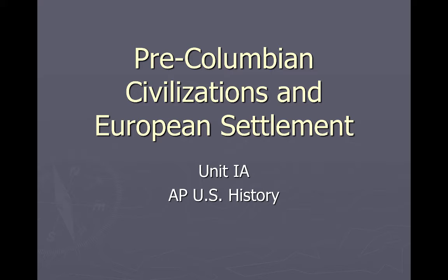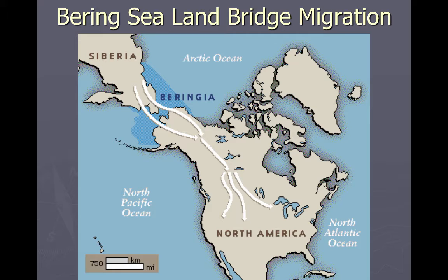Pre-Columbian Civilizations and European Settlement. This is a very brief slide on how Native Americans showed up in the Americas — the prevailing theory of the land bridge, with Eurasians crossing over and going all the way from North America to Central America and to South America.